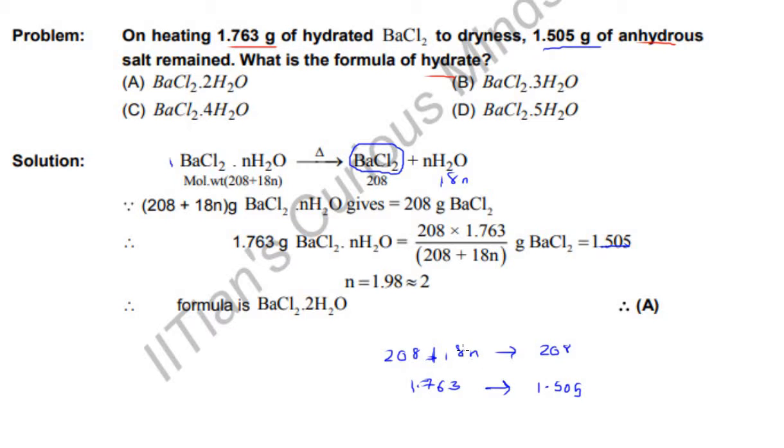So we get the value of n. 1.763 upon 1.505 should be equal to 208 plus 18n upon 208. So the value of n will be almost equal to 2. Therefore, the answer is BaCl2·2H2O which is option A.